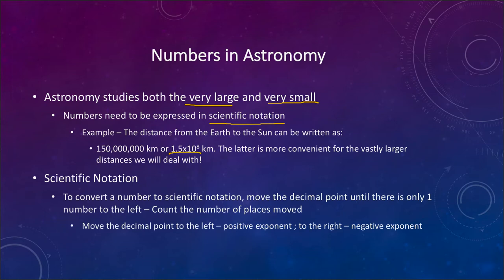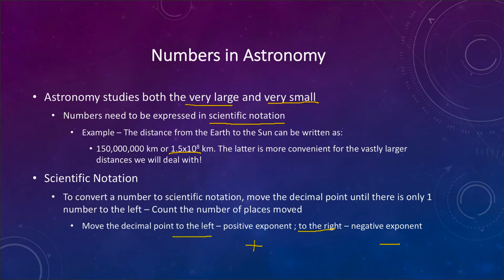To convert a number to scientific notation, we move the decimal point until there is only one non-zero number to the left, and we count the number of decimal places moved. If we move the decimal point to the left, the exponent is going to be positive. If we move it to the right, the exponent is going to be negative. The direction we move it determines the sign of the exponent.